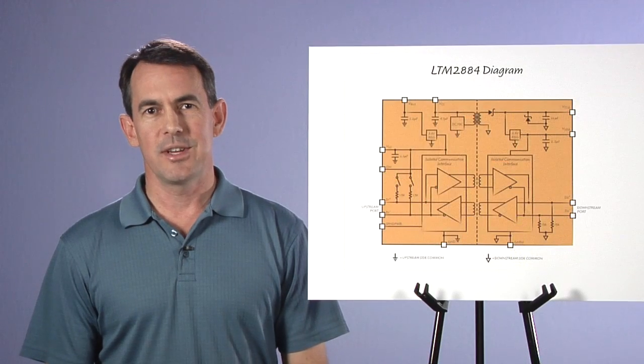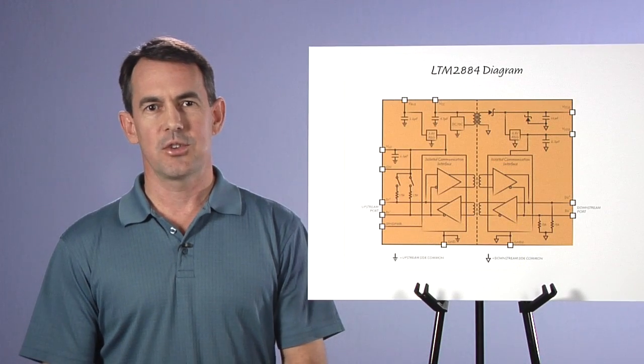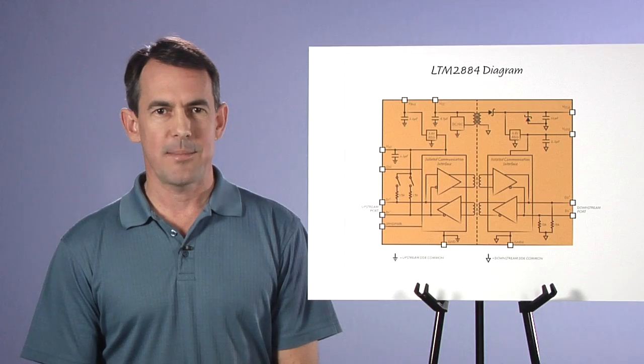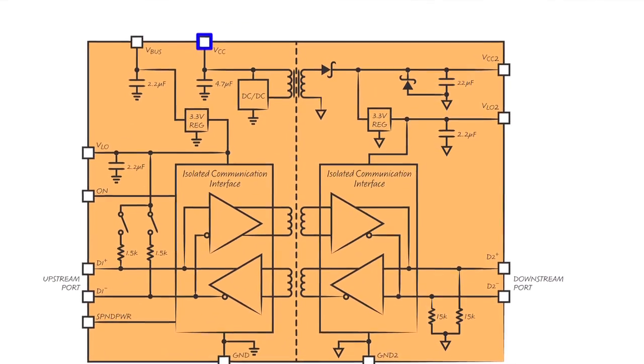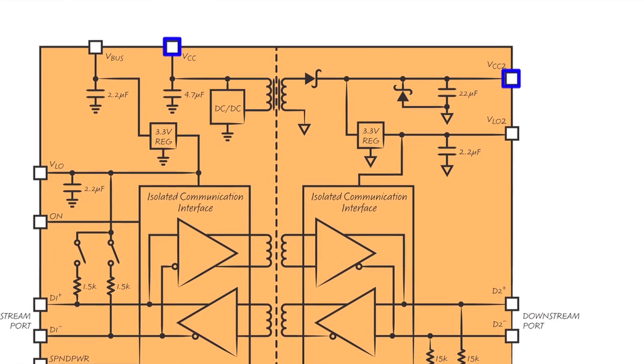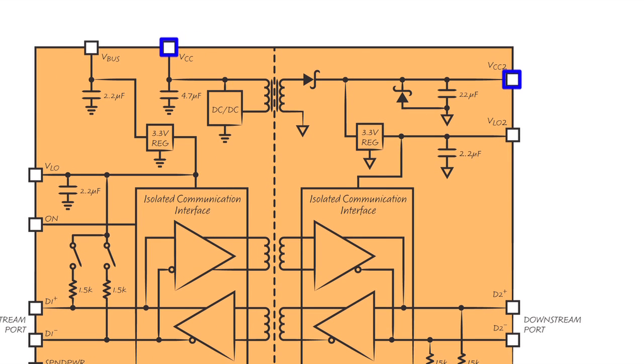A key function of the LTM2884 is the internal isolated power supply capable of delivering up to 2.5 watts. The VCC pin supplies power to the isolated side VCC2 through the DC to DC converter with 2500 volt isolation. VCC voltages from 4.4 volts to 6.5 volts will support 200 milliamps on VCC2 at 5 volts, while VCC voltages from 8.65 to 16.5 will support the full 500 milliamp load on VCC2.